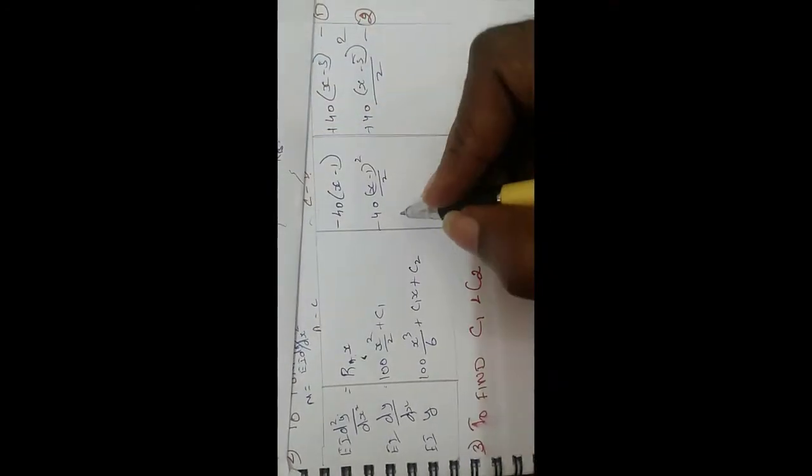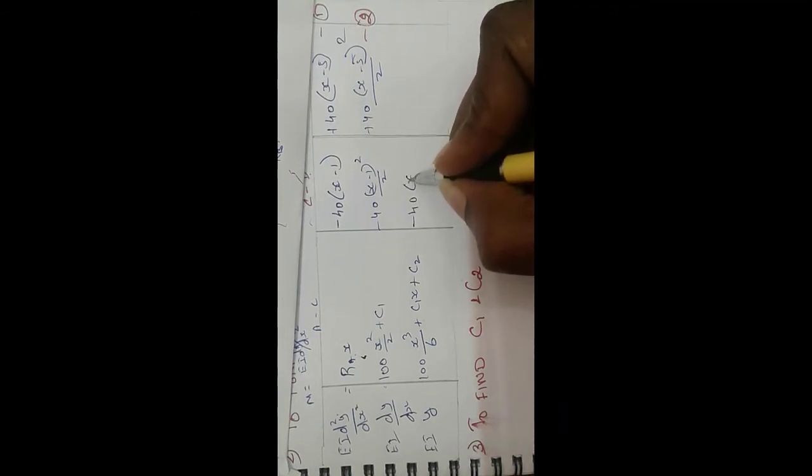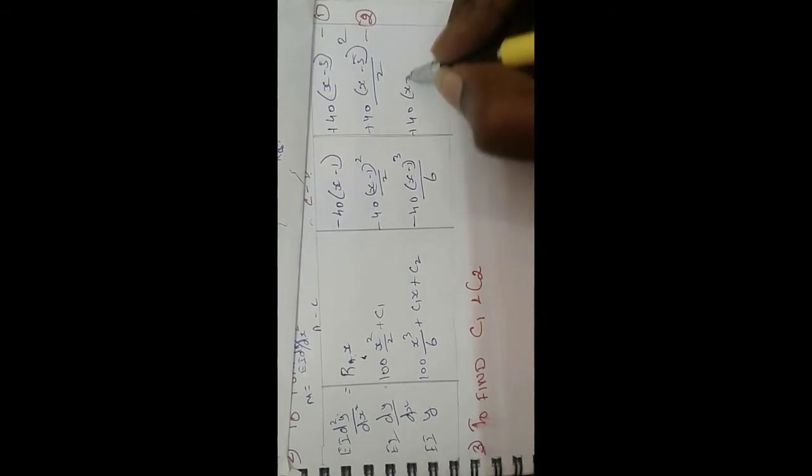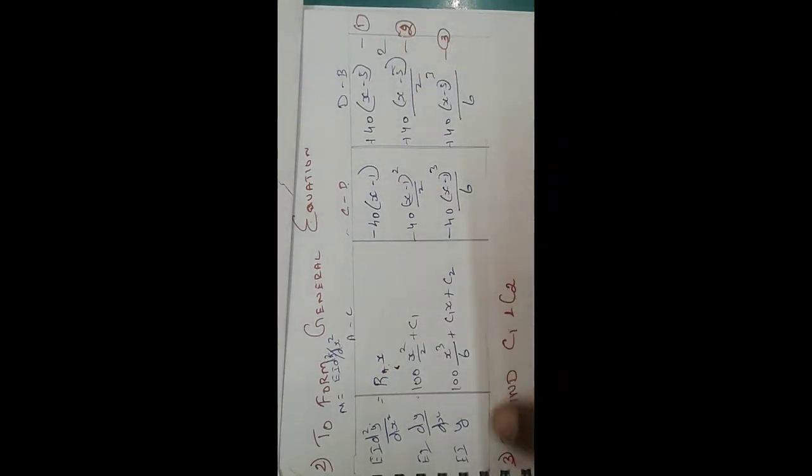Integrating EI dy/dx once more gives EI y. The term 100x²/2 integrates to 100x³/6. C1 integrates to C1·x, and a new constant C2 is introduced. The UDL terms become: minus 40(x minus 1)³/6, plus 40(x minus 5)³/6. This is Equation 3, the deflection equation, which forms the general equation for this problem.